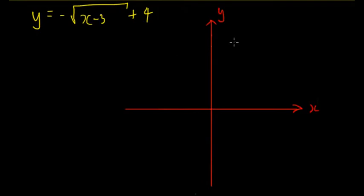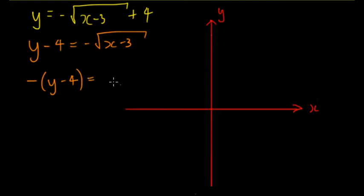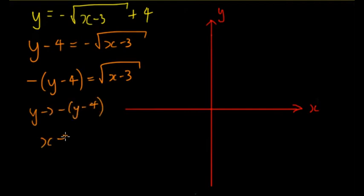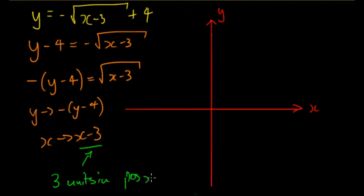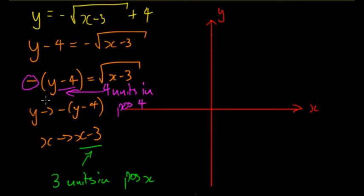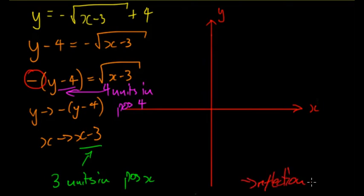Here's an example combining translations and a reflection: y equals negative square root of x minus three, plus four. Rearranging: x minus four equals negative square root of x minus three, then negative y minus four equals the square root of x minus three. So y has been replaced by negative y minus four, and x has been replaced by x minus three. This means a translation of three units in positive x, four units in positive y, and a reflection in the x-axis.